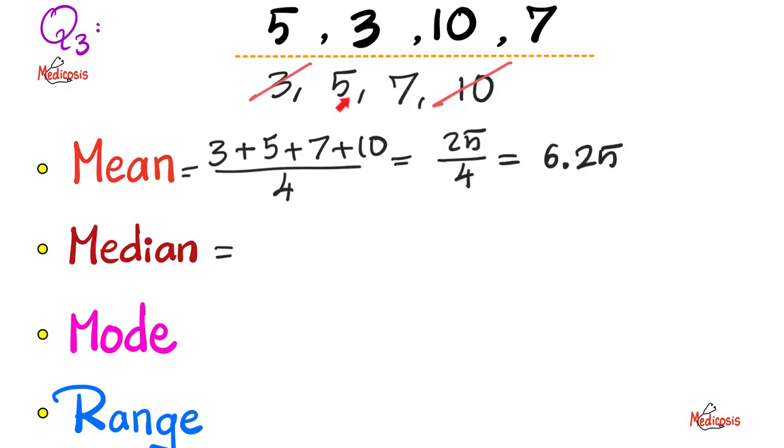So, 5 plus 7 divided by 2. Why is this different here? Because in the previous examples, I gave you a set of odd numbers. In the first question, we had 5 numbers in total. In the second one, I had 7 numbers in total. Both were odd numbers. So, it was easy to grab the number in the middle.